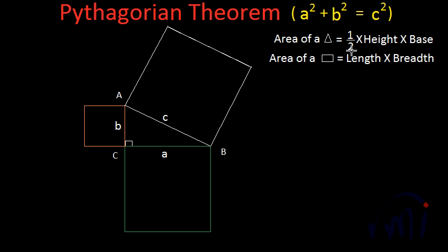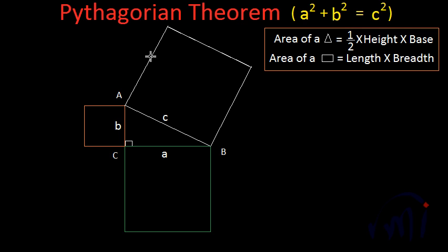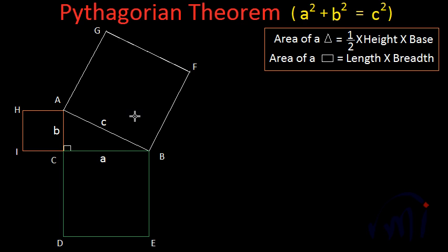To prove this, we are going to use the formulas for area of a triangle and a rectangle. The area of a triangle is equal to one-half height times base, and the area of a rectangle is length multiplied by breadth. We have six extra points, so let me name them and explain how we are going to prove that the area of this large square equals the sum of the areas of these two smaller squares.